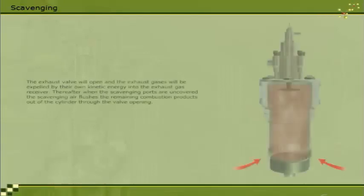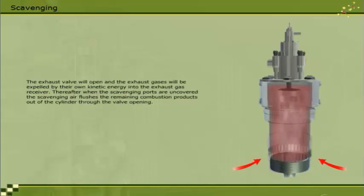The exhaust valve will open, and the exhaust gases will be expelled by their own kinetic energy into the exhaust gas receiver. Thereafter, when the scavenging ports are uncovered, the scavenging air flushes the remaining combustion products out of the cylinder through the valve opening. This expulsion of the exhaust gas is sometimes referred to as exhaust blowdown.